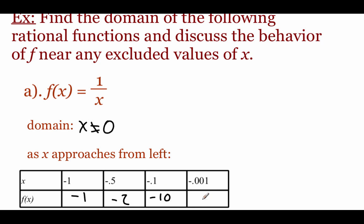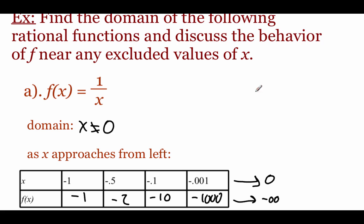These numbers are getting more and more negative. If we plug in negative 0.001 for x, we get negative 1,000. As our x value gets closer and closer to zero — approaching zero from the left-hand side — our function values are approaching negative infinity. We can use the notation: as x approaches zero from the left (indicated by the little negative superscript), our f of x values approach negative infinity.